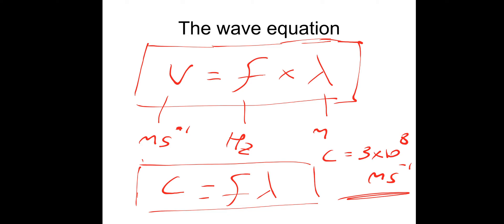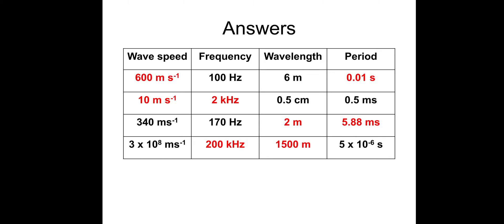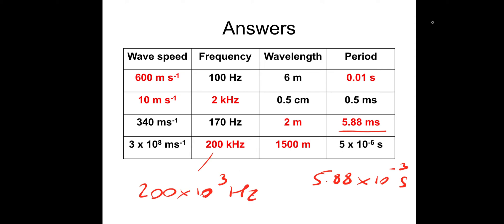So we can do some example questions now. If you want to pause and have a go, then I'll take you through the answers. This table is in milliseconds, so your answer might be 5.88 times 10 to the minus 3 seconds — if so, that's fine. And this is 200 kilohertz, so that would be 200 times 10 to the 3 hertz, or 2 times 10 to the 5. You haven't got the question wrong if it's not written in the same format — if you've got an equivalent answer, that's okay.